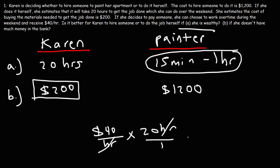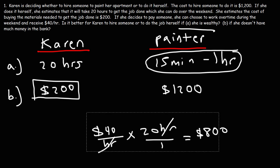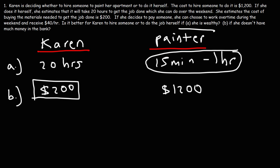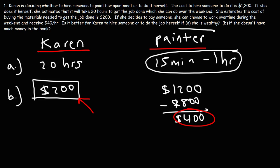The 20 hours it would take her to paint the apartment she could instead spend at work. So 40 times 20 equals $800 — if she works instead of painting, she can earn $800 and use that towards paying the painter. The net cost of hiring the painter if she goes to work is $400, which is still greater than the $200 cost of painting it herself. So in either case, it's better if she paints her own apartment because it saves her the most money.